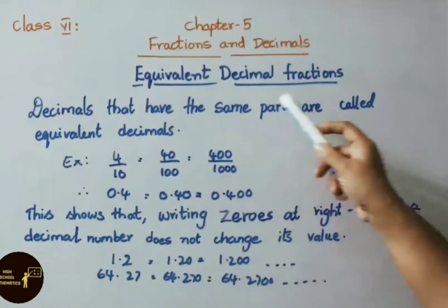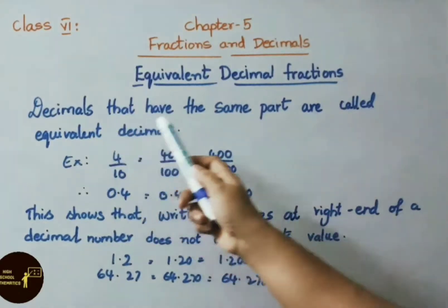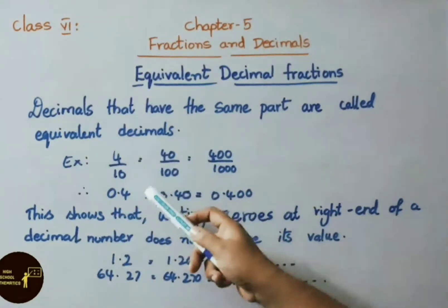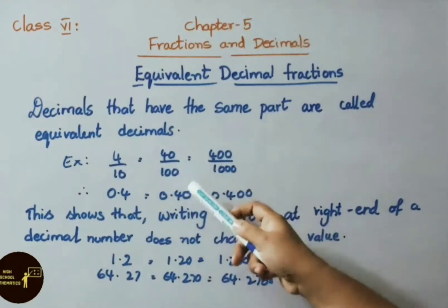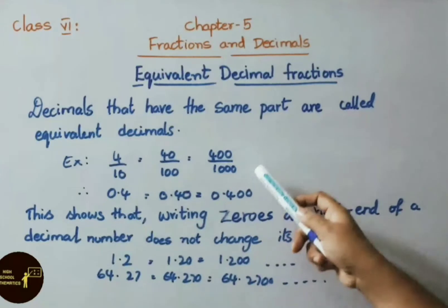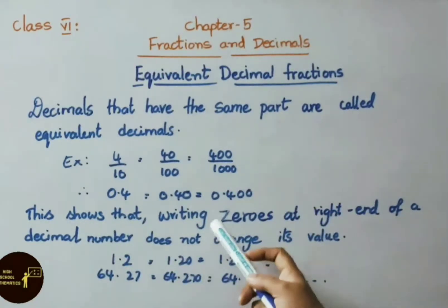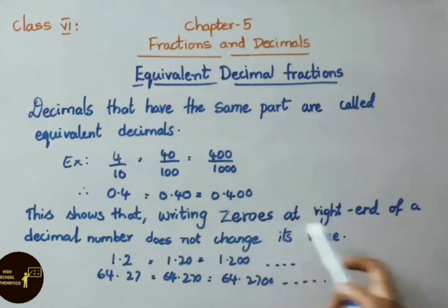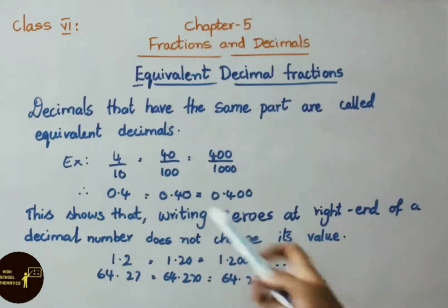Equivalent decimal fractions. Decimals that have the same part are called equivalent decimals. For example, 4 by 10 equals 40 by 100 equals 400 by 1000. This shows that writing zeros at right end of a decimal number does not change its value. Here all these three values are same.